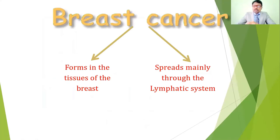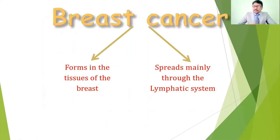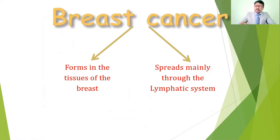Breast cancer depends upon the involvement of tissues. It may form in the ductal and lobular tissues, which are the milk-producing glands. Breast cancer may spread through the lymphatic system, through the blood, and to other parts of the body through metastasis.